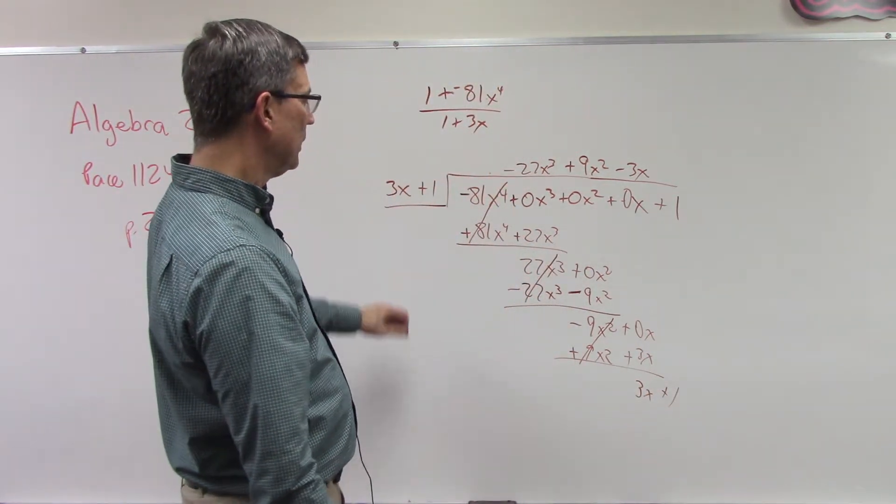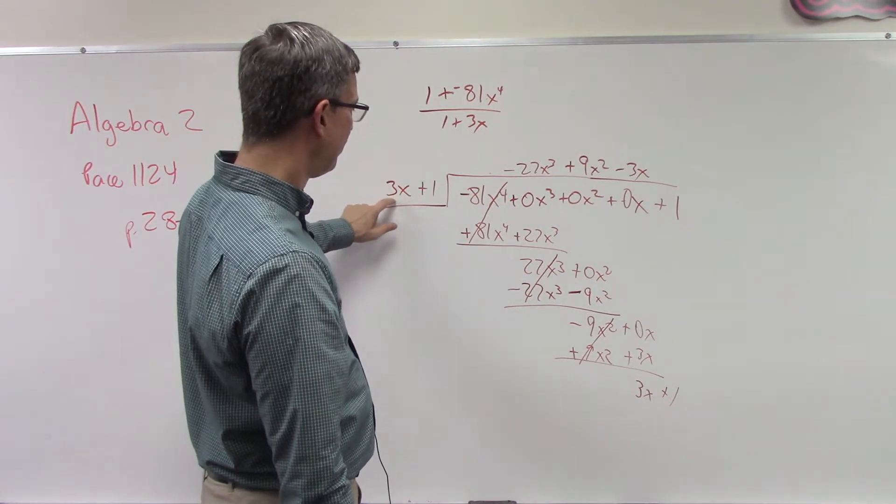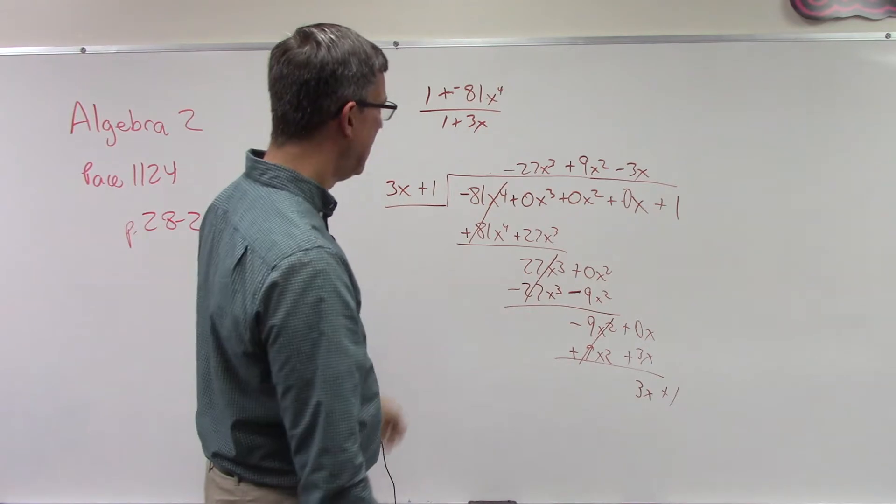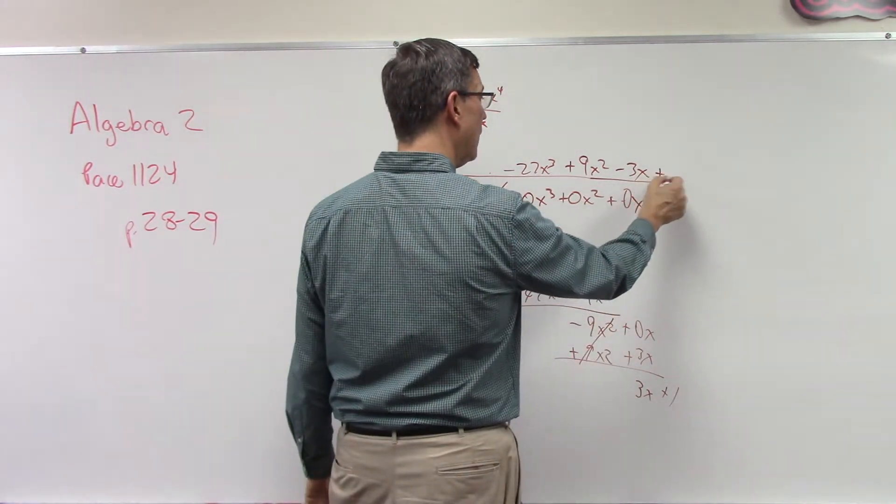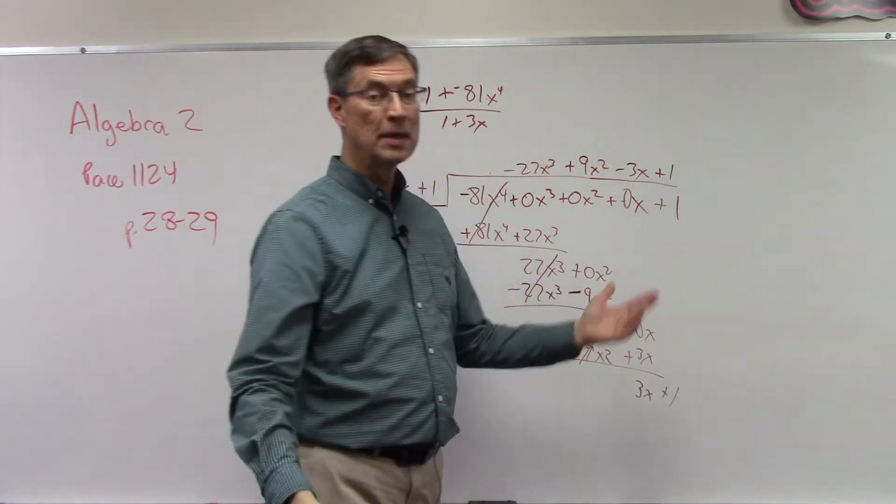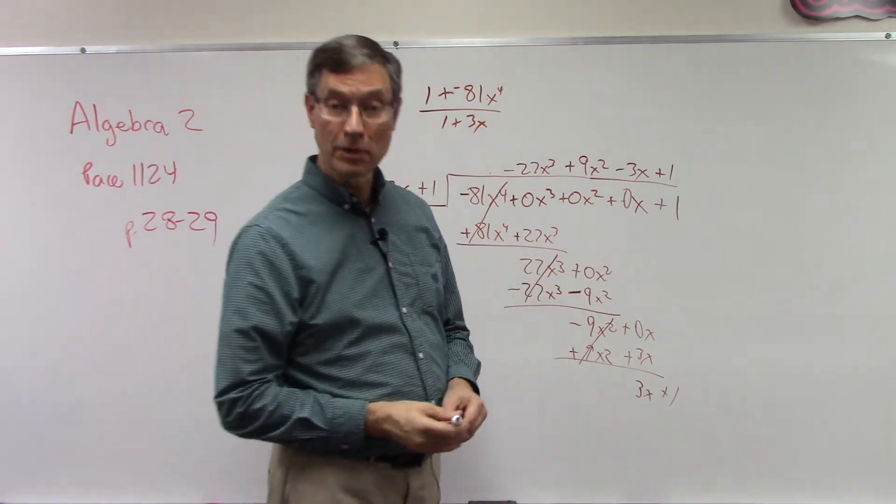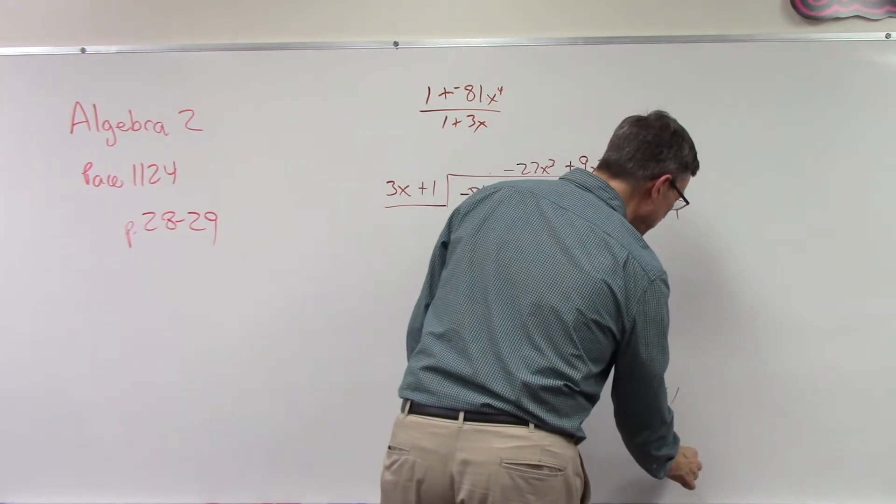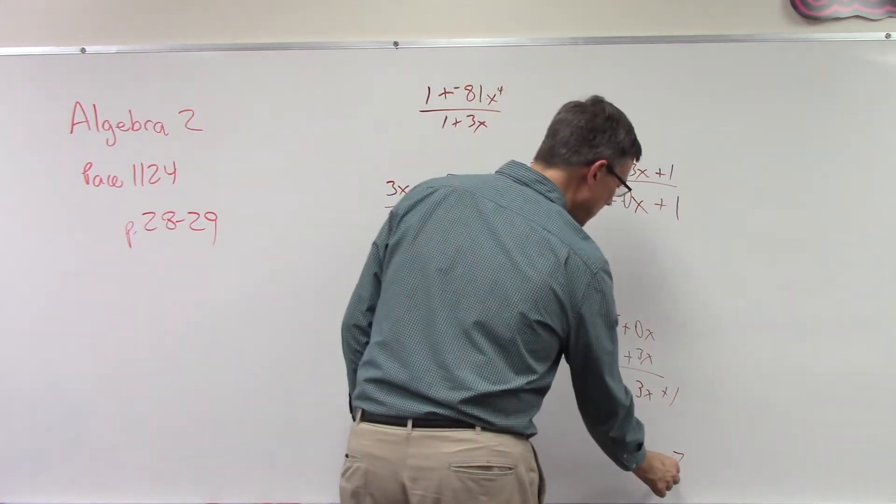Now we bring down the 3x and we bring down the 1. Oh looky looky looky, 3x plus 1 times 1. Multiply 1 times both of those, subtract. In this case it looks like we don't even get a remainder.